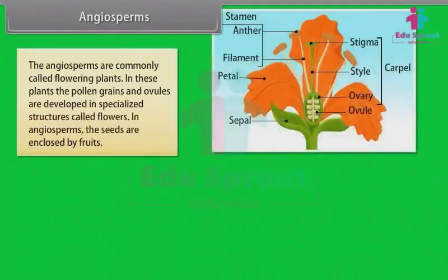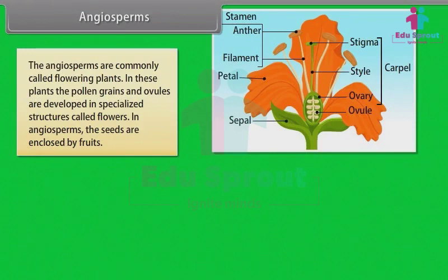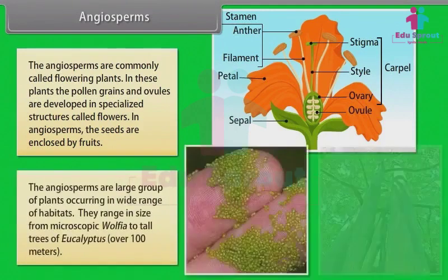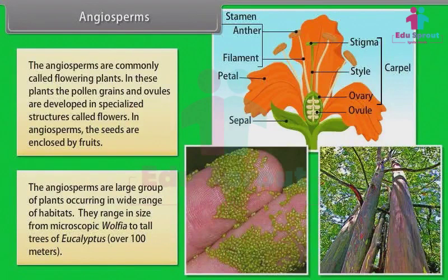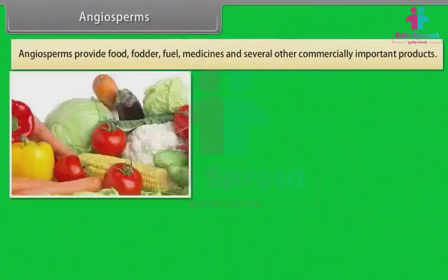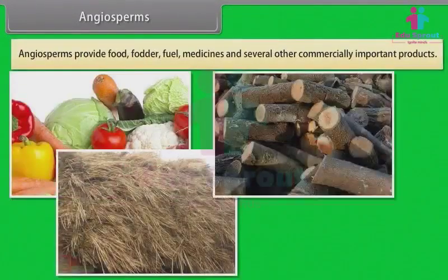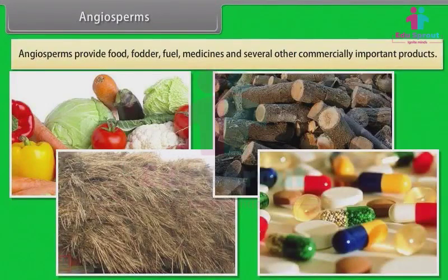The angiosperms are commonly called flowering plants. In these plants, the pollen grains and ovules are developed in specialized structures called flowers. In angiosperms, the seeds are enclosed by fruits. The angiosperms are a large group of plants occurring in a wide range of habitats, ranging in size from microscopic Wolffia to tall trees of Eucalyptus over 100 meters. Angiosperms provide food, fodder, fuel, medicines, and several other commercially important products.